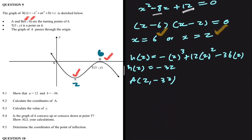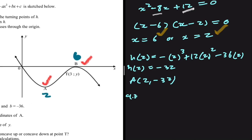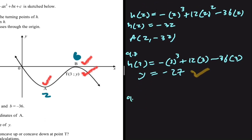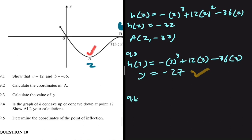For 9.3, we calculate the y-value of T. We're given the x-value of T is 3, so we just substitute. h(3) equals minus 3 cubed plus 12 times 3 squared minus 36 times 3. Calculating gives y equals minus 27. That answers 9.3.